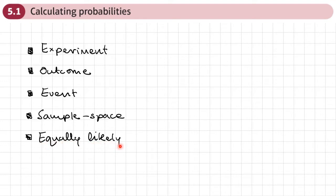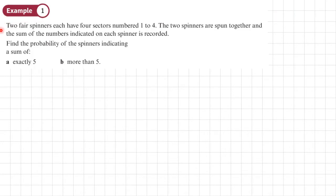Example one: Two fair spinners each have four sectors numbered one to four. The two spinners are spun together and the sum of the numbers indicated on each spinner is recorded. Find the probability of the spinners indicating a sum of: a) exactly five, and b) more than five.